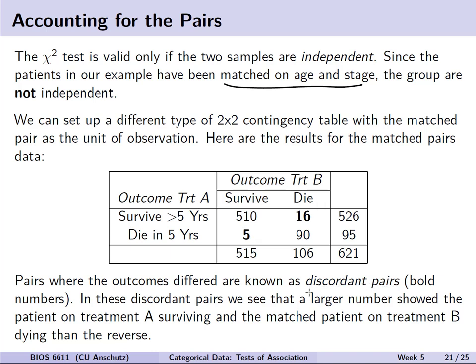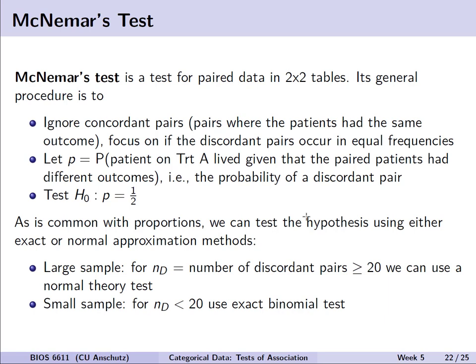The off-diagonal discordant values of 16 and 5 represent cases where one patient survived in A but not B, or vice versa. This stands in contrast to the concordant measures in cells A and D — 510 and 90 — representing the proportion where both survived or both died. To analyze this data and account for the paired structure, we use McNemar's test. The general idea is that we ignore the concordant pairs and focus only on the discordant pairs B and C to test whether they are occurring in equal frequency.